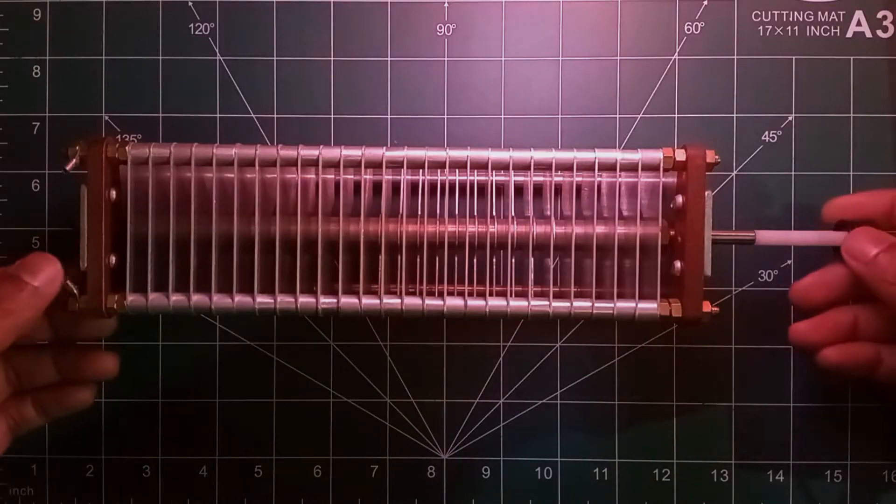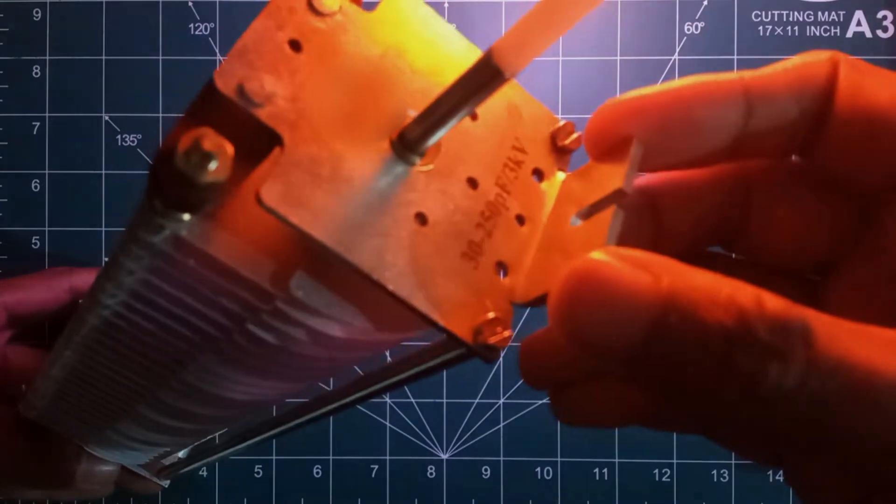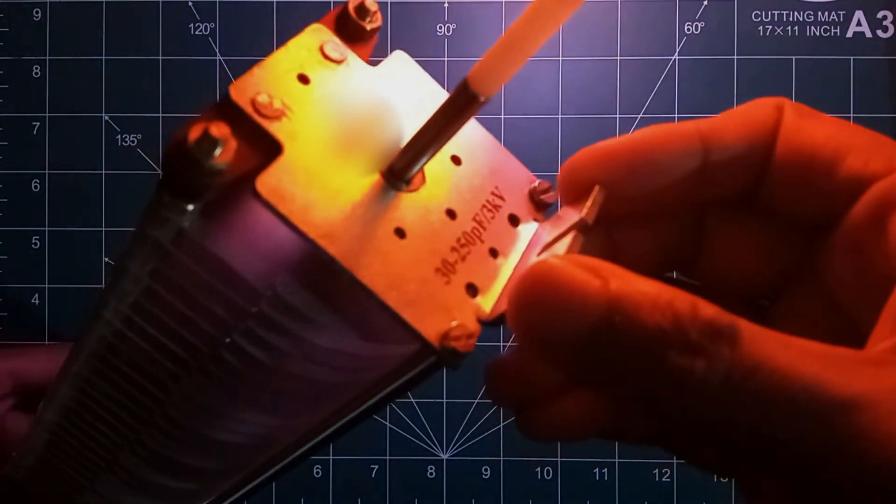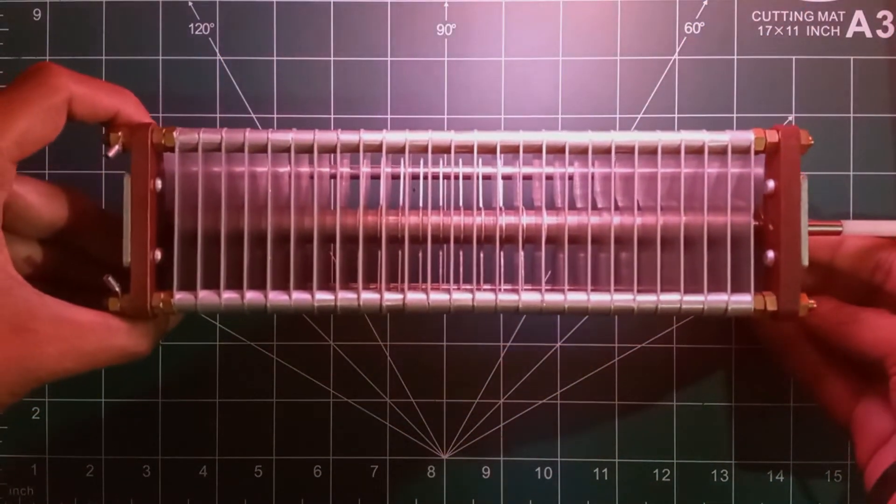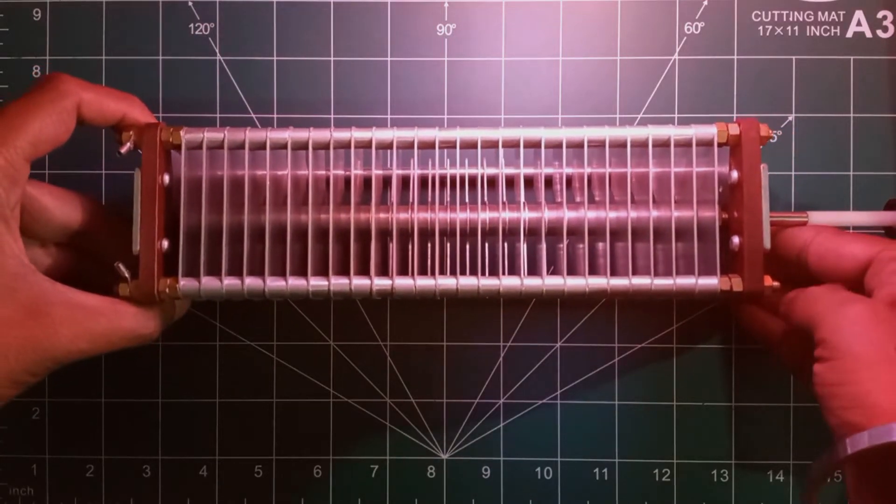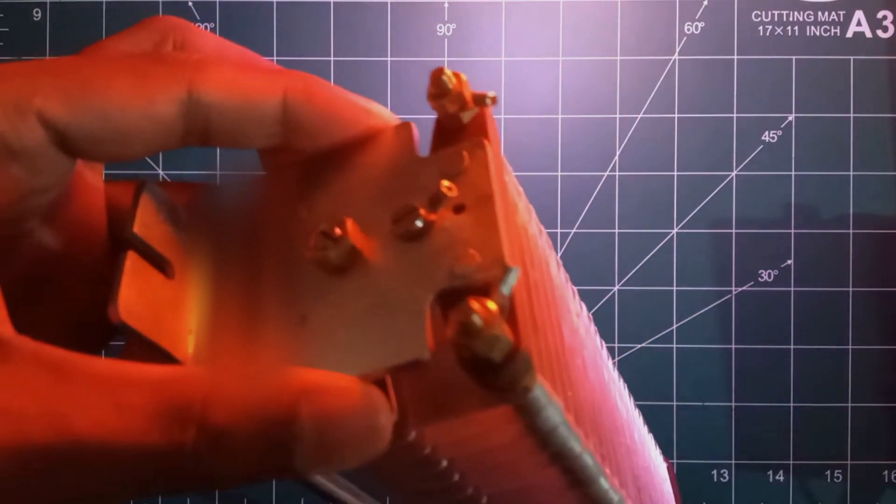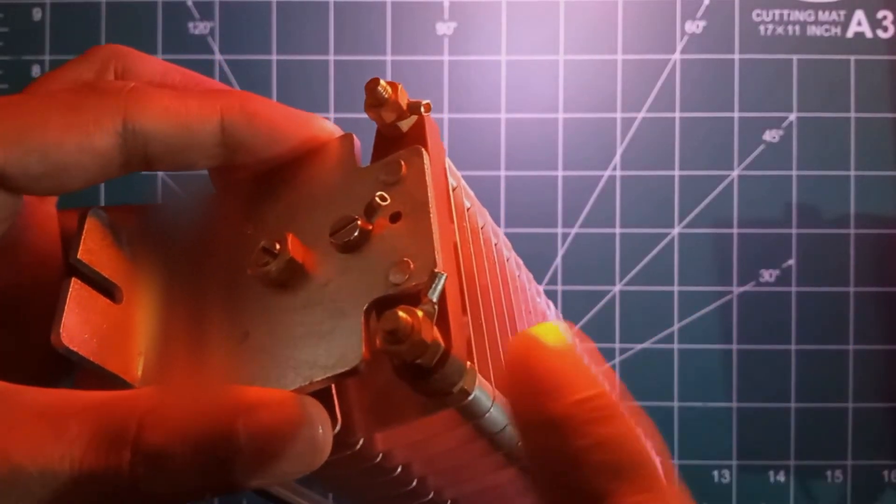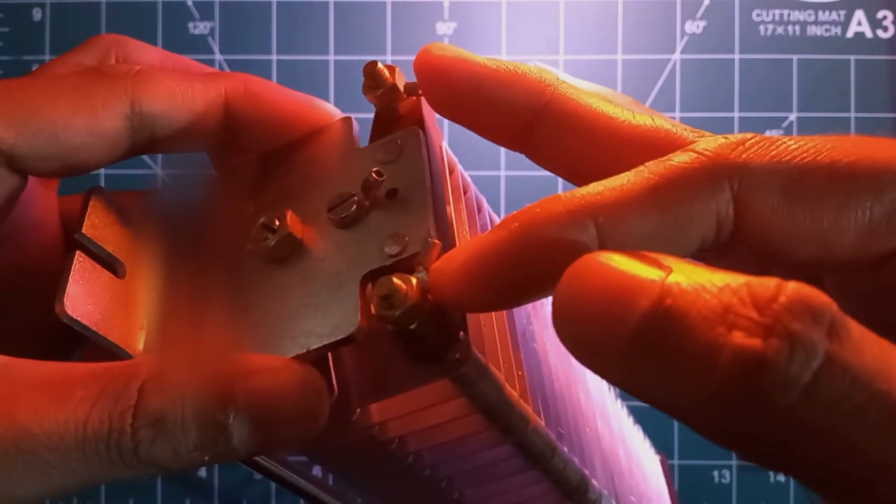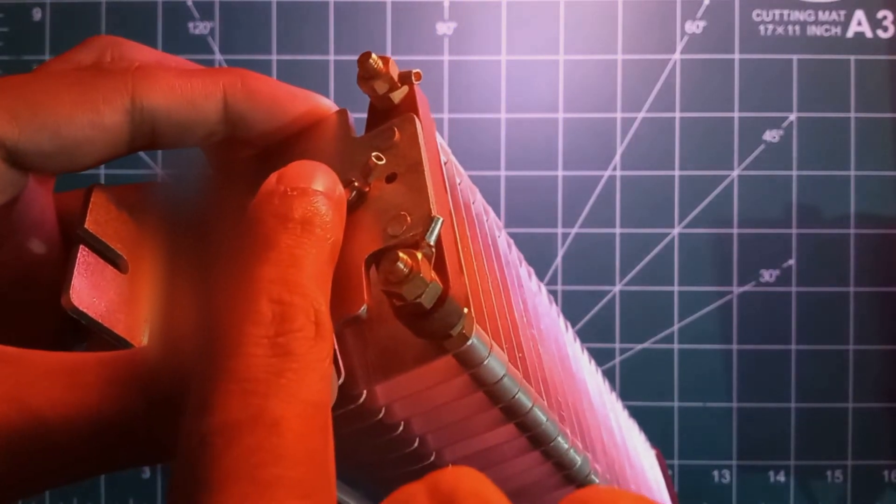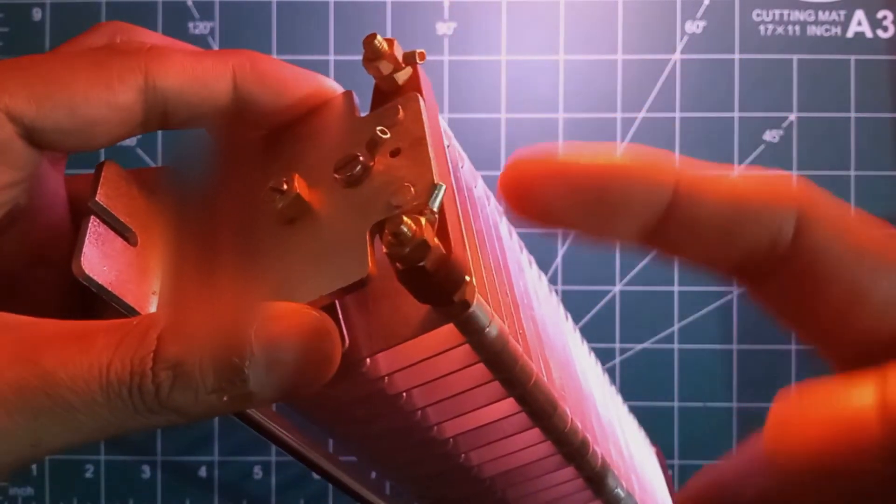This is the capacitor and the rating is 30 to 250 picofarads with voltage rating of 3 kilovolts. The connections to the capacitor can be extended from the back side. Here we have two points which are common, which is connected to the stator blades, and one connection here which is connected to the rotor blades. Please note that these two points are common points.